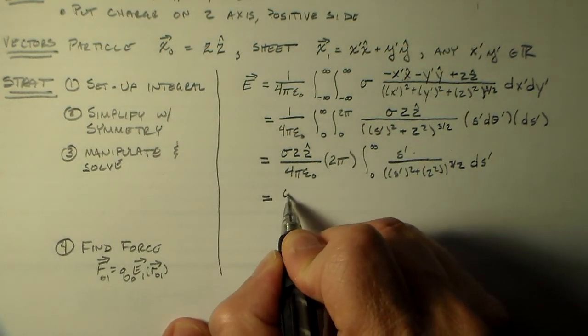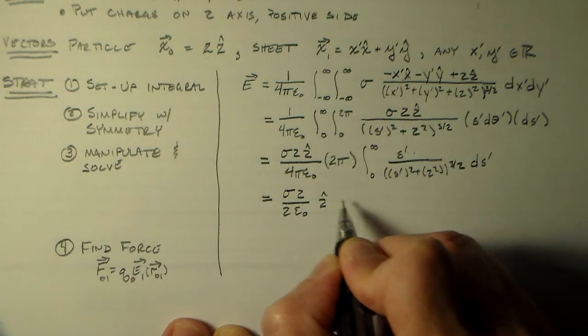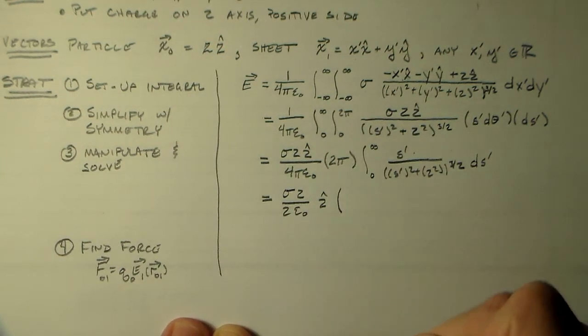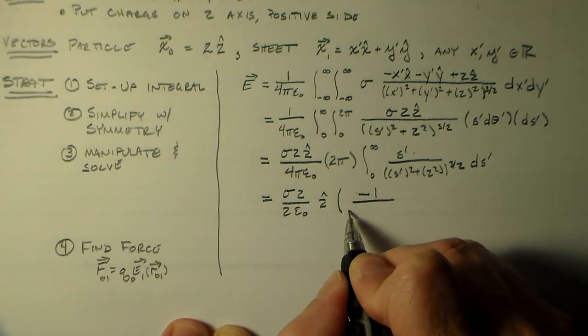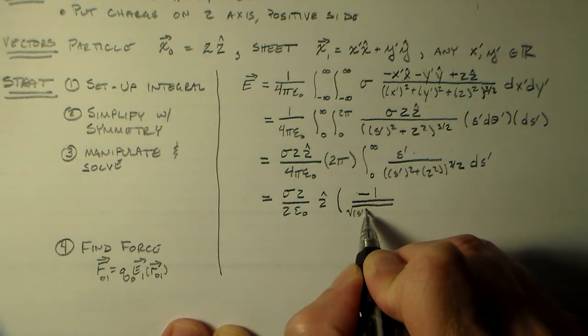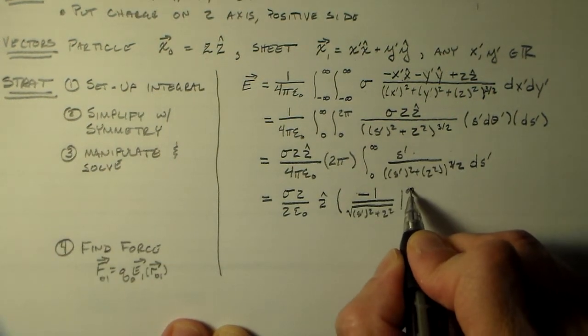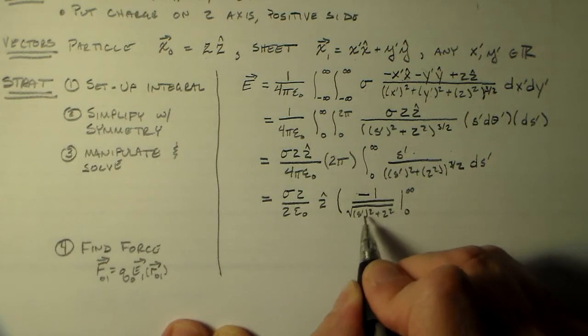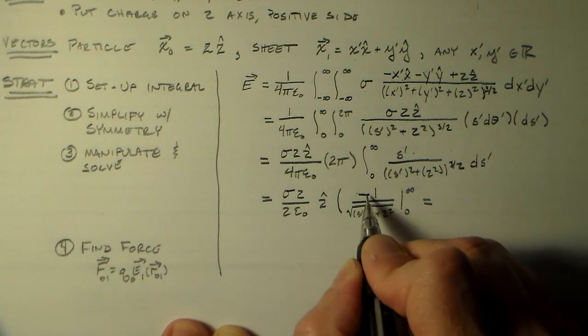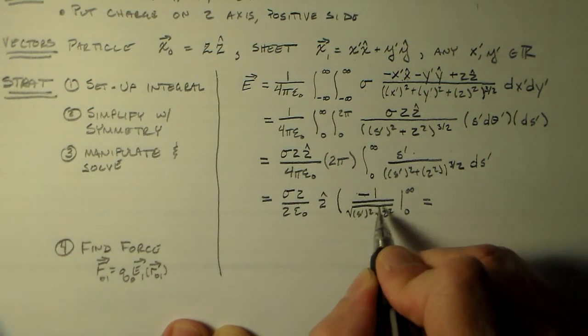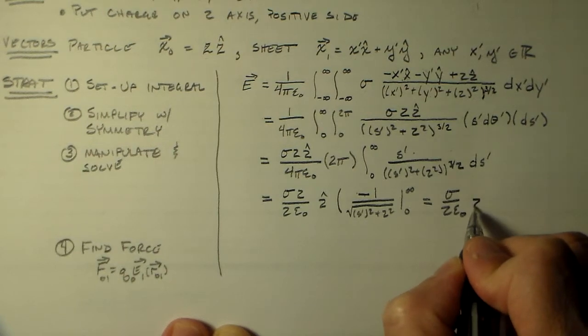So we then have sigma Z over two epsilon naught in the Z hat direction, and we want to multiply, then we have this minus one over the square root of S prime squared plus Z squared, zero to infinity, which is equal to zero minus minus one over Z. So this cancels, that minus one will cancel, and this square root of Z over Z squared cancels with that Z. So we have sigma over two epsilon naught Z hat.